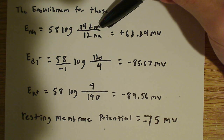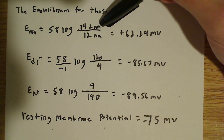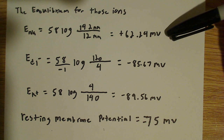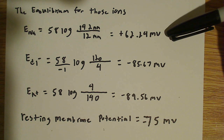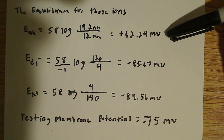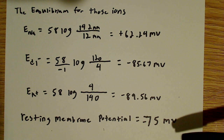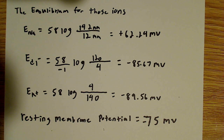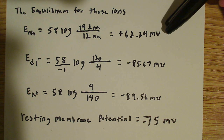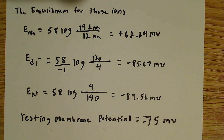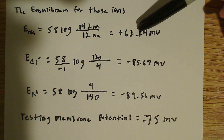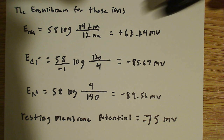Using arbitrary values — concentration outside being 142 and inside 12 for sodium — I get a value of plus 62.24 millivolts. So which way is sodium moving at a resting membrane potential of negative 75 millivolts? The sodium ions must be moving into the cell because they want to make the cell more positive, closer to the equilibrium potential of plus 62.24 millivolts.